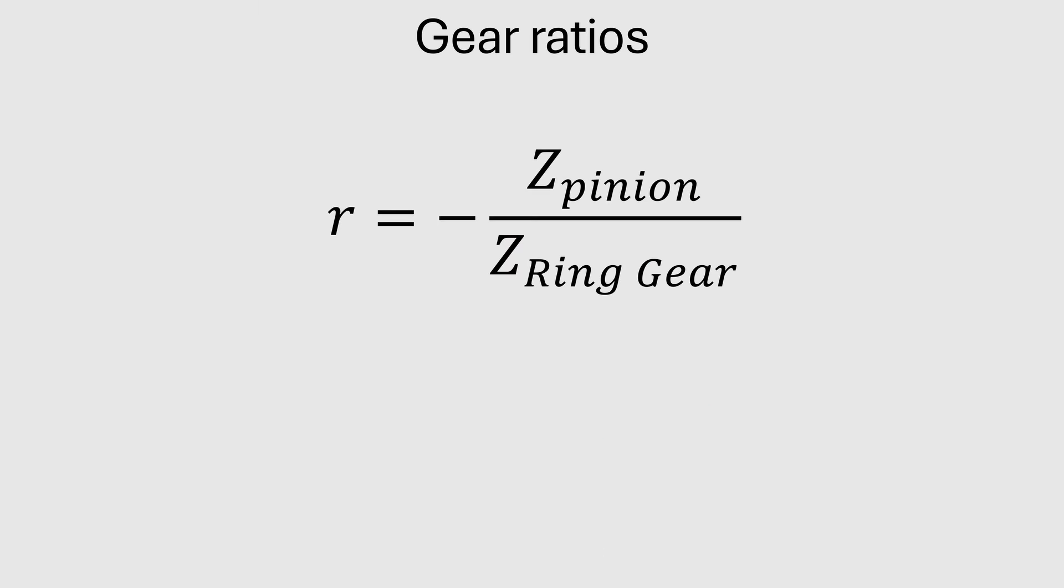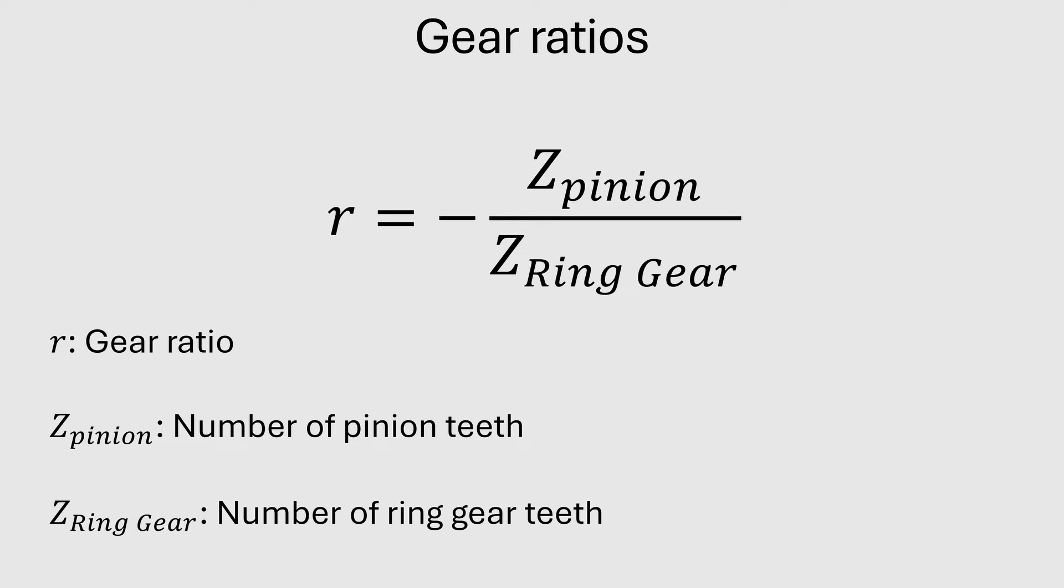The gear ratio is given by this formula: R equals Z pinion over Z ringer, with R being the reduction ratio, Z pinion the number of pinion teeth, and Z ringer the number of ringer teeth.